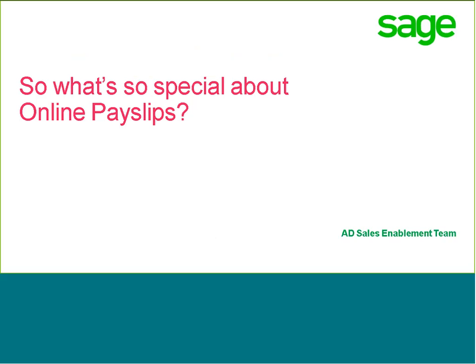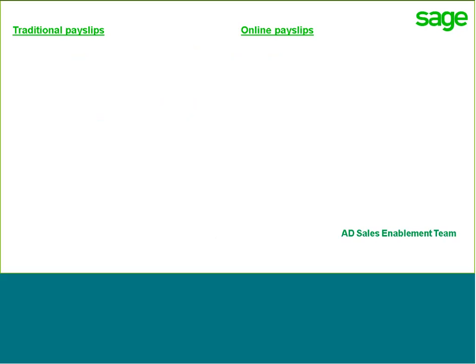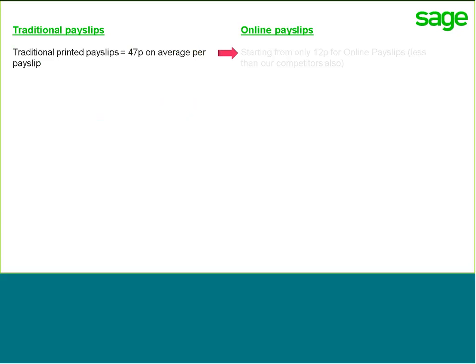So, what's so special about online payslips? Why have we introduced this option? Well, if you are using the traditional option of printing payslips and posting them out to employees, it costs approximately 47 to 50 pence or more, depending on how you post them and what stationery you use. Now, this cost is reduced to about 12 pence for online payslips, so the margin on making savings can be quite considerable.